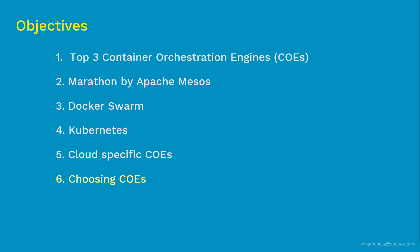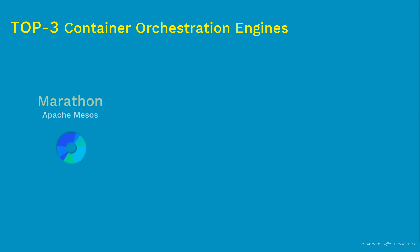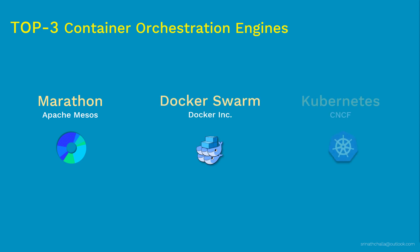The top three container orchestration engines we're going to discuss in this video are: Marathon from Apache Mesos, Docker Swarm from Docker Inc, and finally the gold standard of container orchestration engines, which is Kubernetes. Let's get started with Marathon from Apache Mesos.